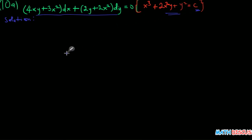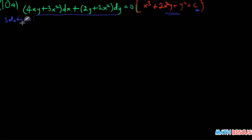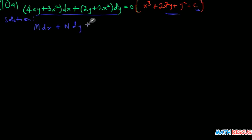Based on the format in which this is written, I would assume this is most likely going to be an exact equation. To confirm, let me check if it is actually an exact equation. I'll start by comparing this with the general form, that is M dx plus N dy equals zero, where M and N are functions of x and y.